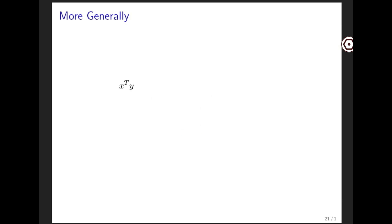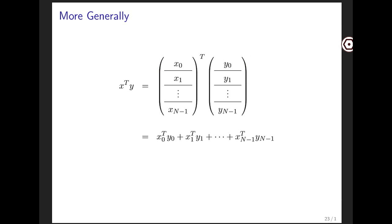This generalizes. If you want to take the dot product of x and y, then you can partition x and y into many subvectors, where it's important that these subvectors have the same size. When you do that, what you see is that you can take the dot product of the corresponding subvectors, and then add all of those together, which you can also write as this summation right here.